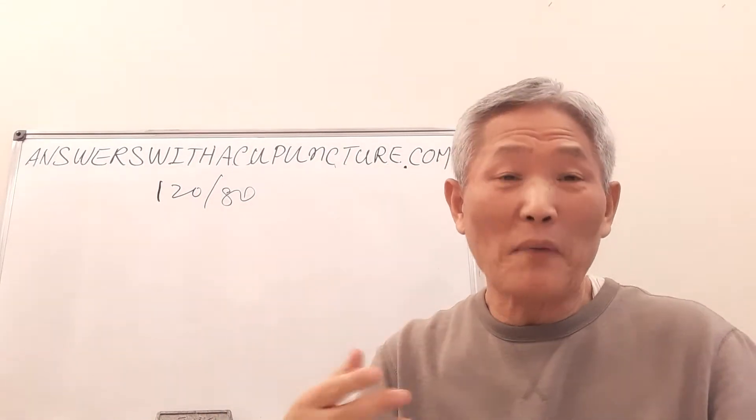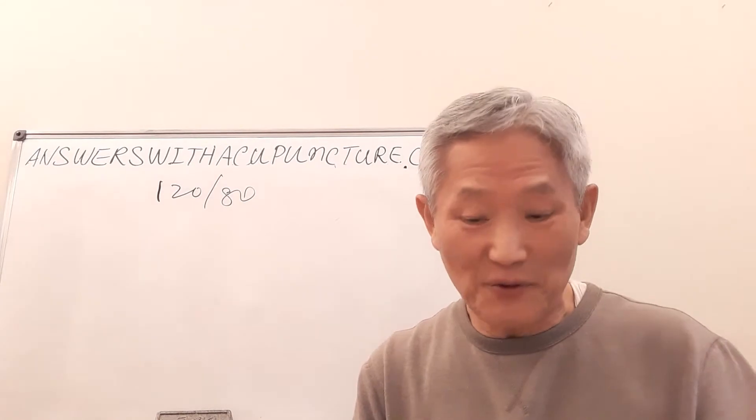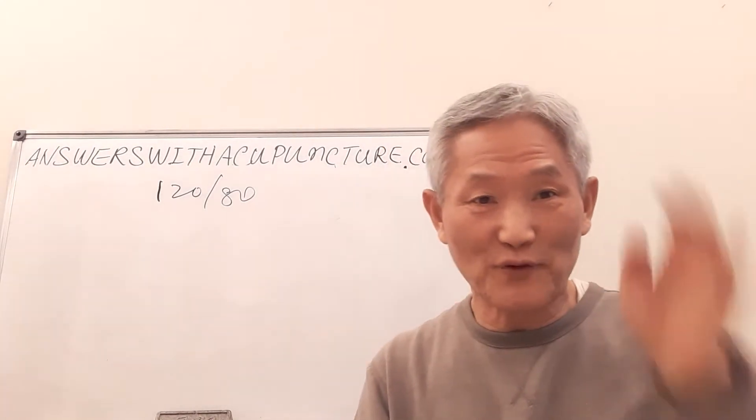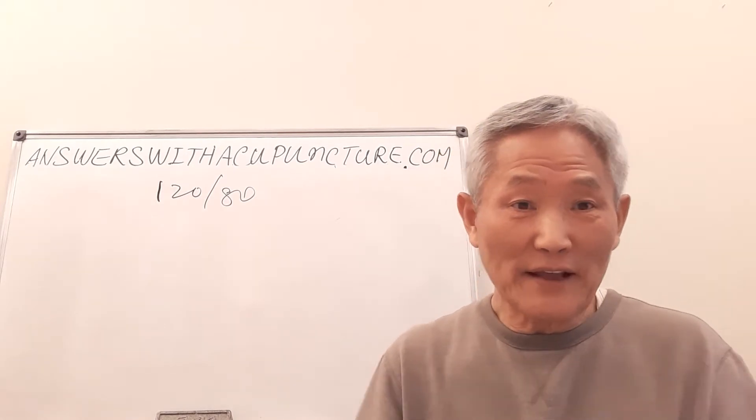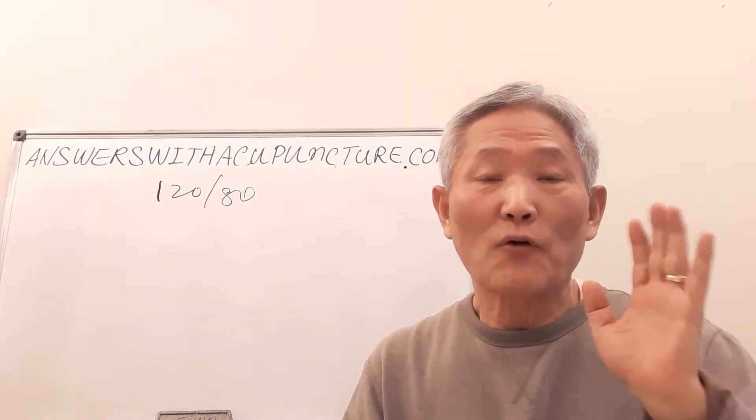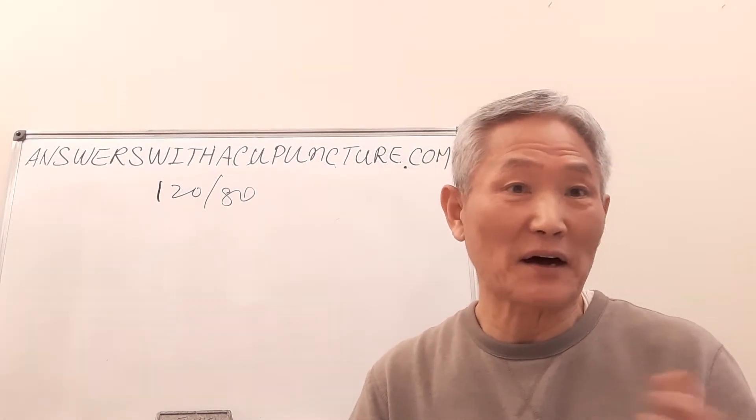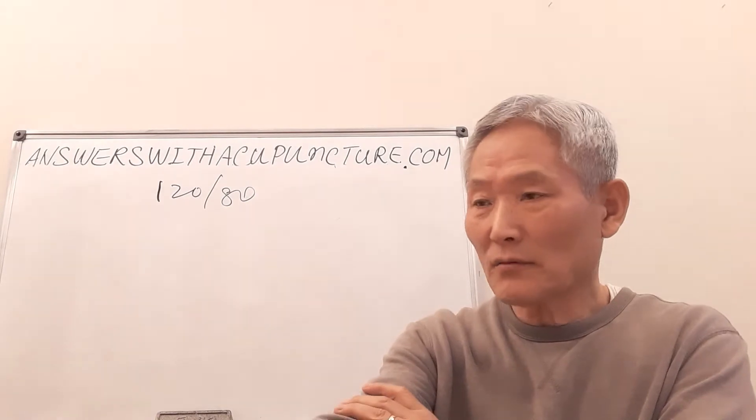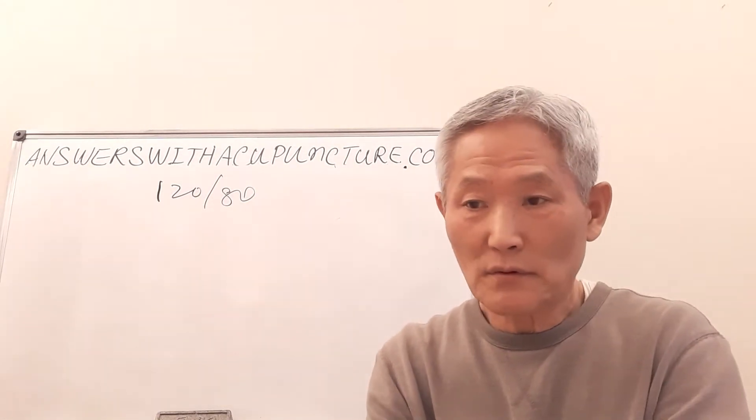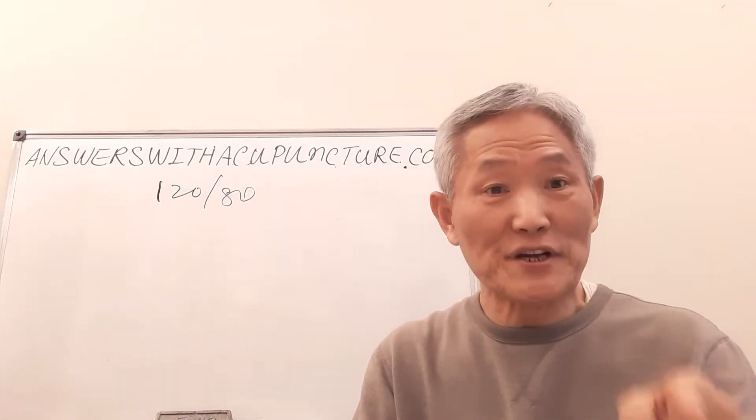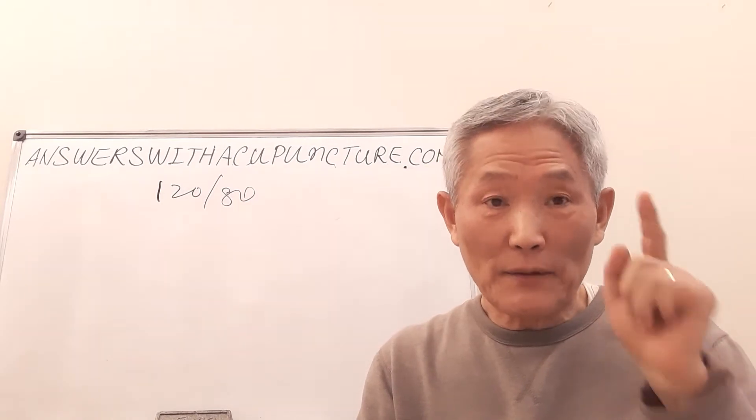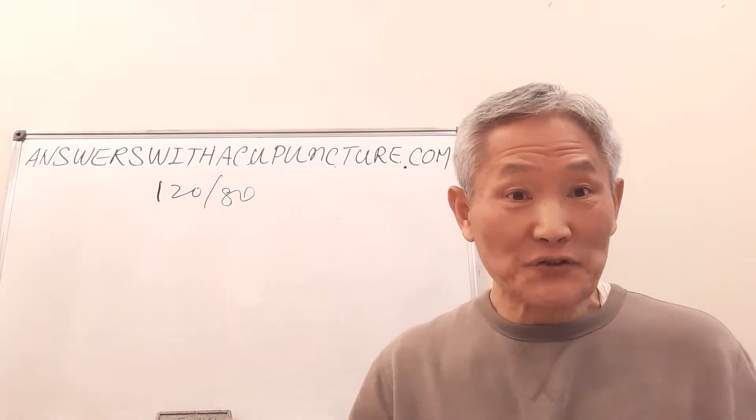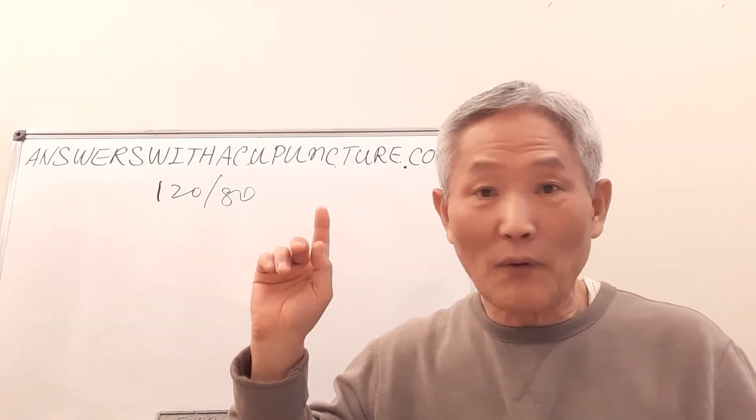When someone tells me their blood pressure, I usually ask how old are you? Let's say 60. If I hear 145, I say that's normal, you don't have to treat. Why? 45 years ago I went to a medical office and my blood pressure was normal. Why is it normal? You are 30 years old, and age plus 90 equals normal blood pressure. So when I was 30 years old plus 90 equals 120, that's normal.